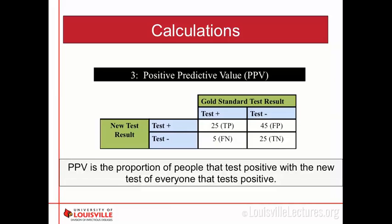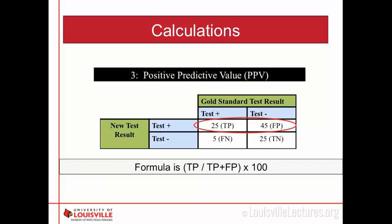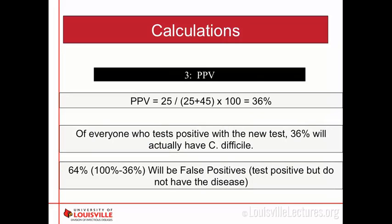This leads into positive predictive value and negative predictive value — all four concepts are very important in diagnostic testing. Positive predictive value is the proportion of people who test positive with the new test who actually have the disease. The formula is true positives divided by true positives plus false positives, times 100. Using these numbers, we get a positive predictive value of 36%, meaning of everyone who tested positive with the new test, 36% actually have C. diff, and 64% are false positives.